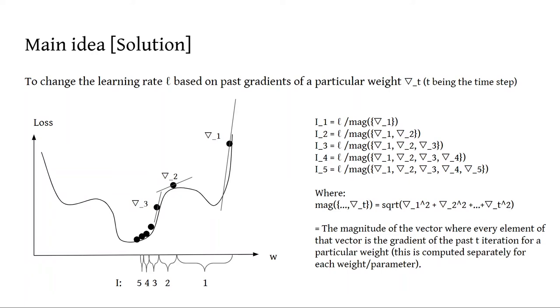At every iteration, the learning rate becomes the given learning rate divided by the magnitude of a vector, where every element in said vector contains the gradient of all the past iterations for a particular weight.